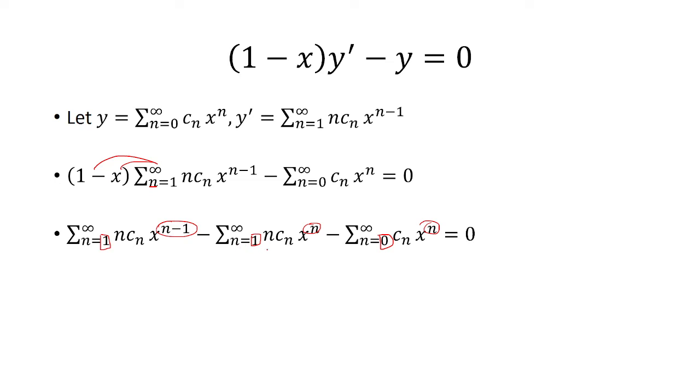So why don't we do n=0 first. The second term, if I let n=0, the whole expression inside is 0. Because you have 0 times c_0 times x^0, that's all 0. So if I put n=0, it doesn't change the result here.